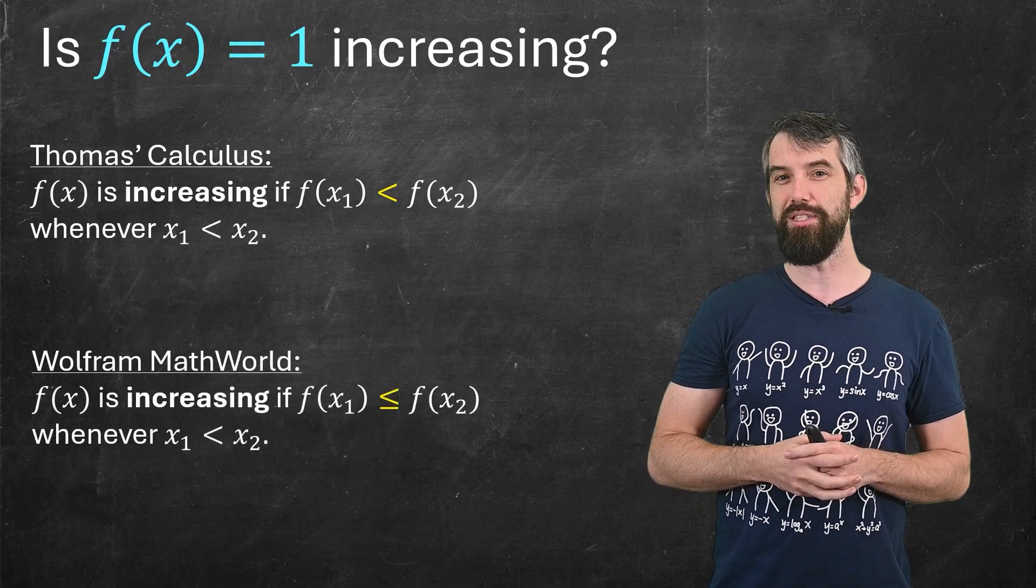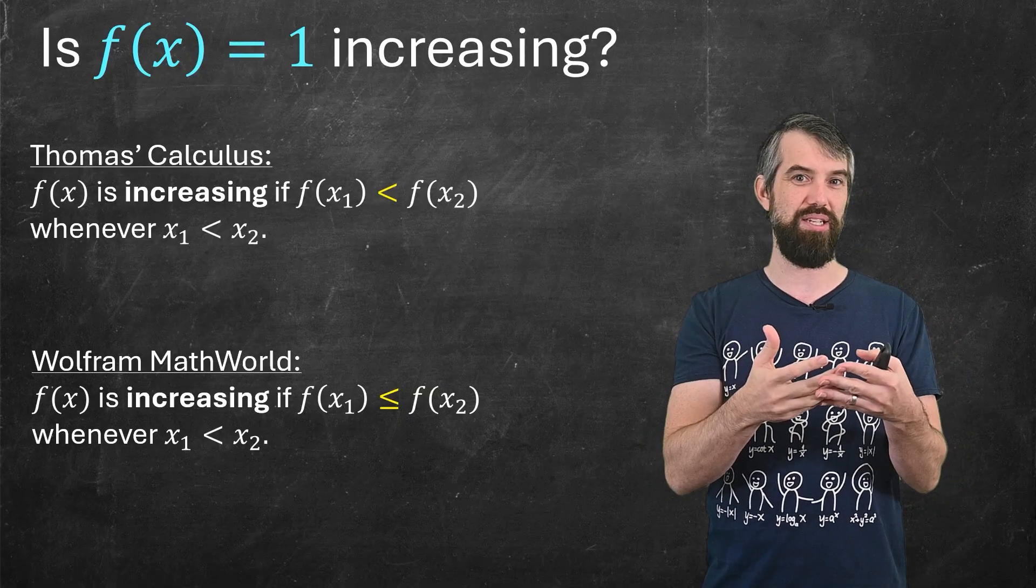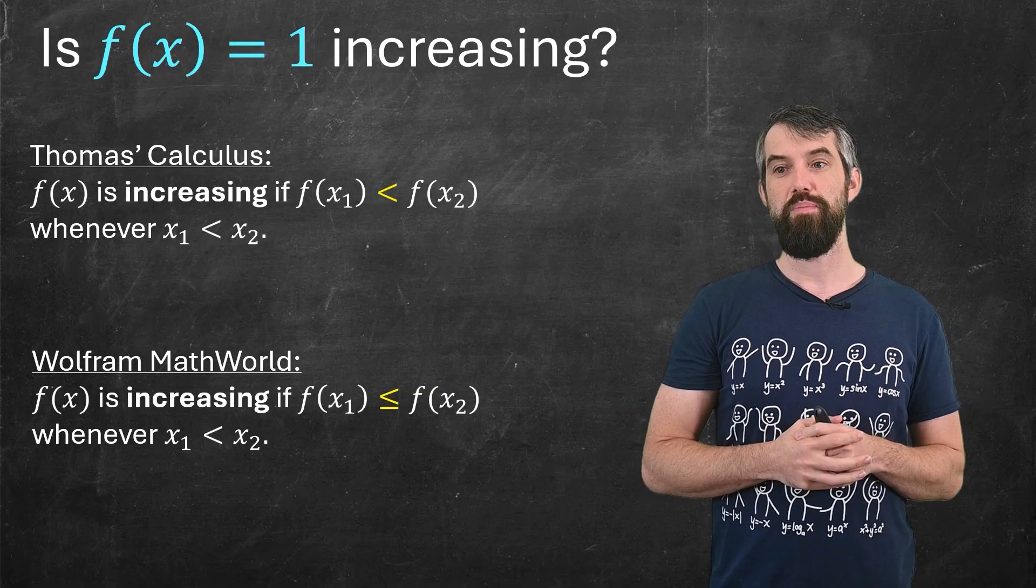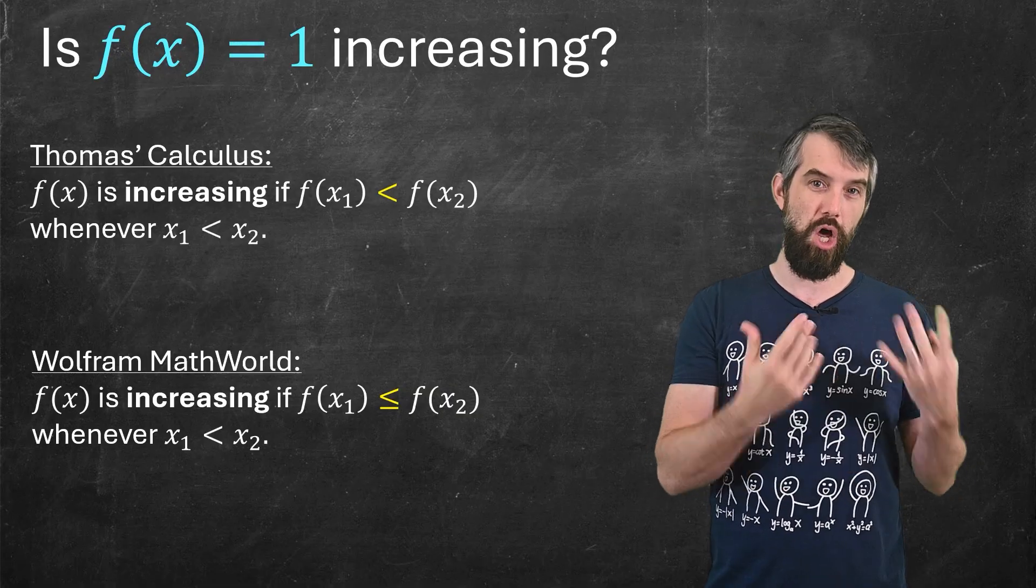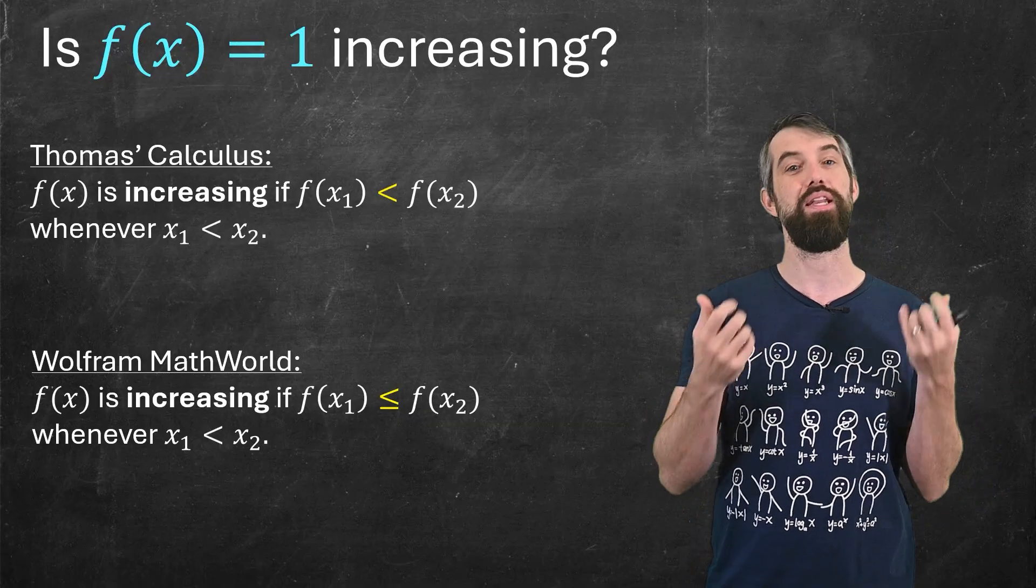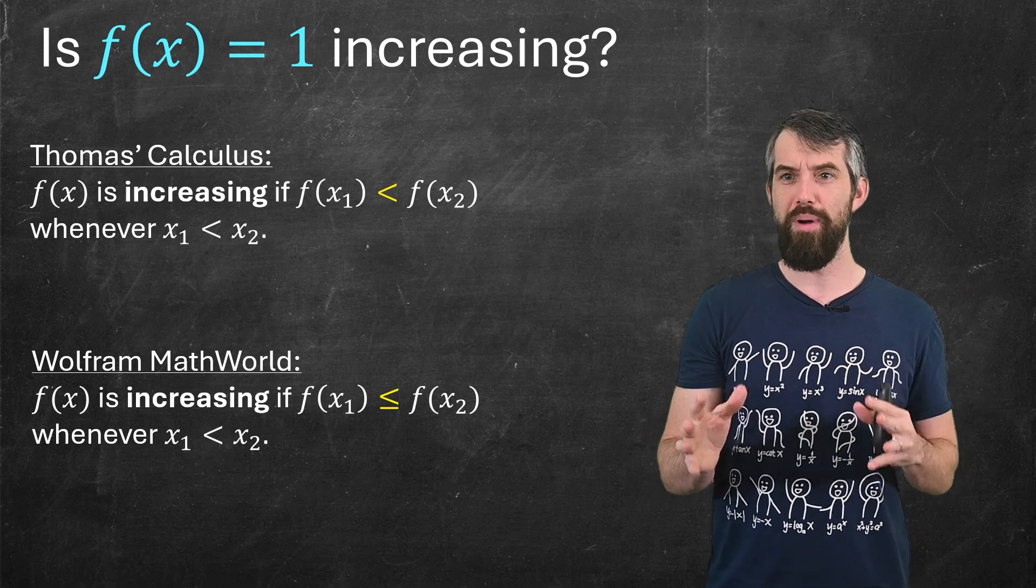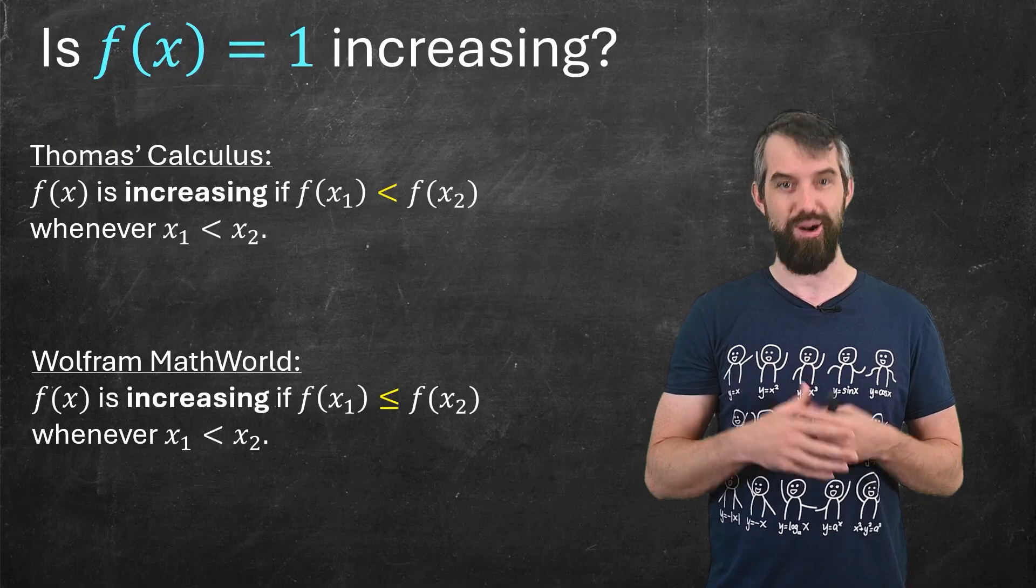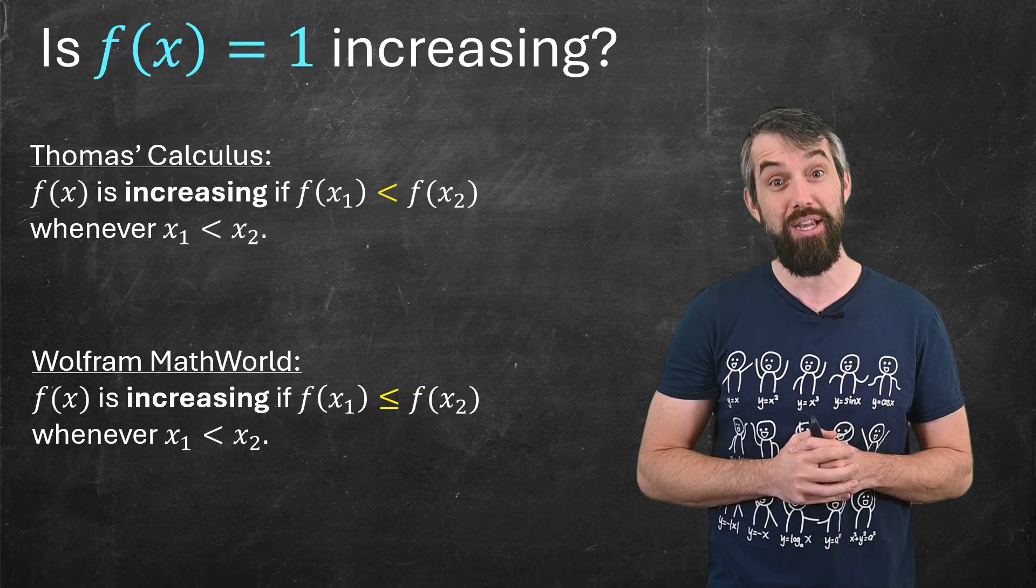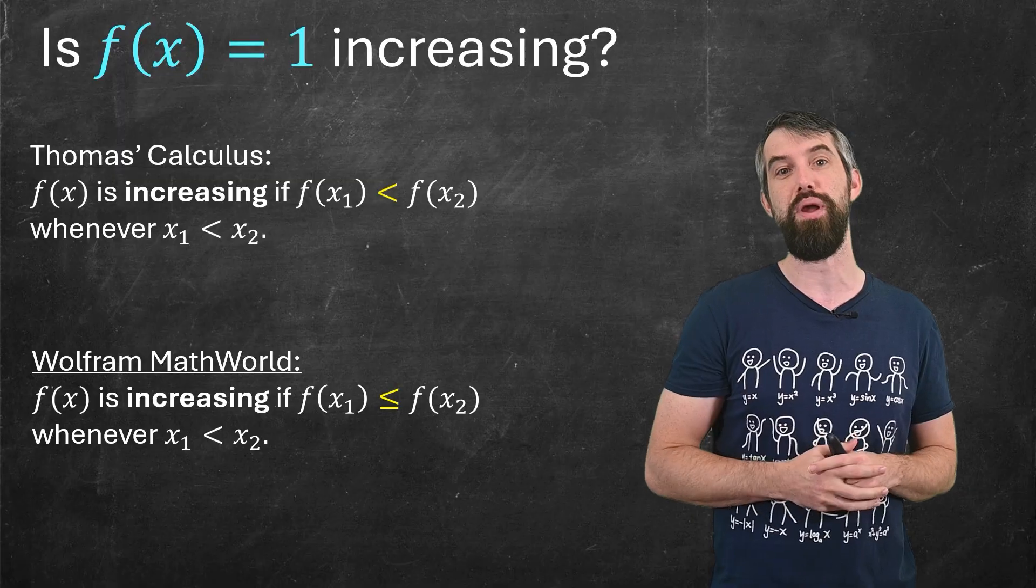And so according to Thomas, this is not an increasing function. According to Wolfram, it is an increasing function. People using the Wolfram definition would say the Thomas definition is of strictly increasing. So there's increasing and then strictly increasing, the special case when it's strictly less than. Note by the way that while I haven't written it on the screen, both of these definitions are about an interval of points where x1 is less than x2. The standard calculus student error is to confuse the definition of increasing with the derivative at a specific point being positive.